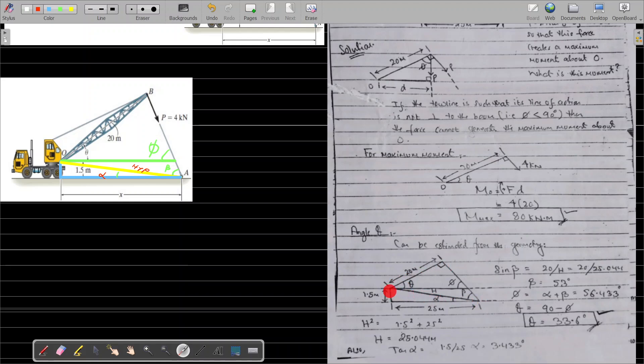We can calculate beta: sine beta equals 20 meters divided by the hypotenuse. Sine is opposite over hypotenuse, so this is 20 divided by 25.044 meters. We get our beta, which is 53.56 degrees.